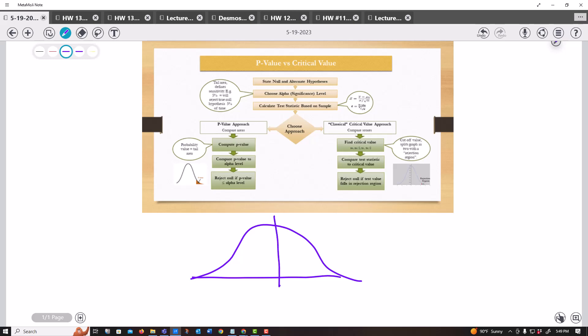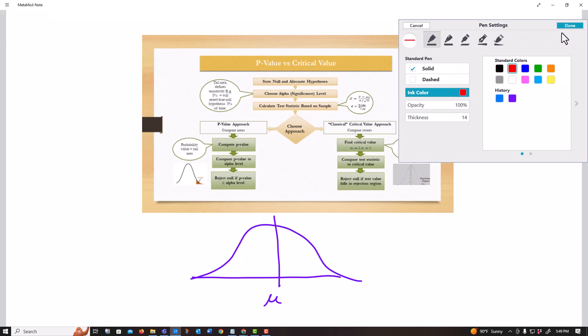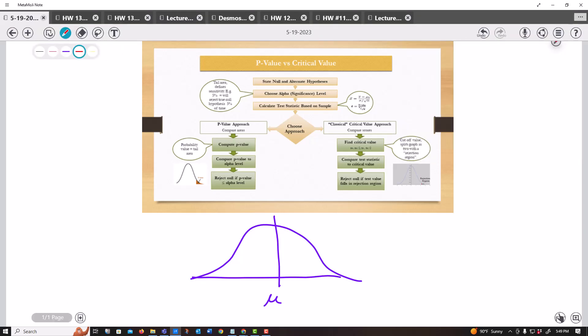And so this is the value that they're trying to get us to believe. And when we do a hypothesis test, what happens is we get values all over the place. And so when we take a sample, we might get a value right here. We might get a value right here. And the closer we get to the mean of what they're telling us, the more likely we are to believe what they're telling us.